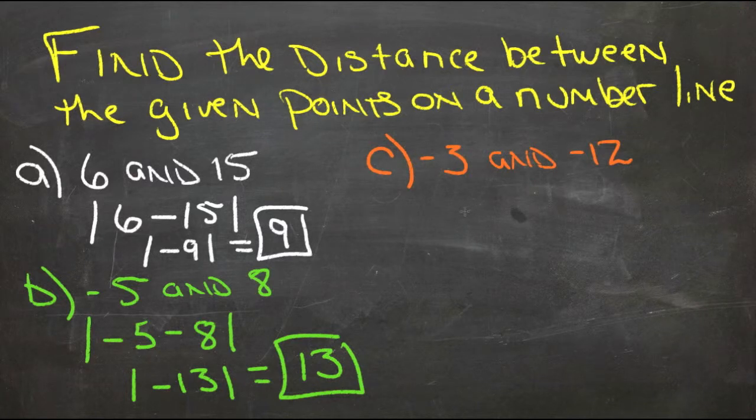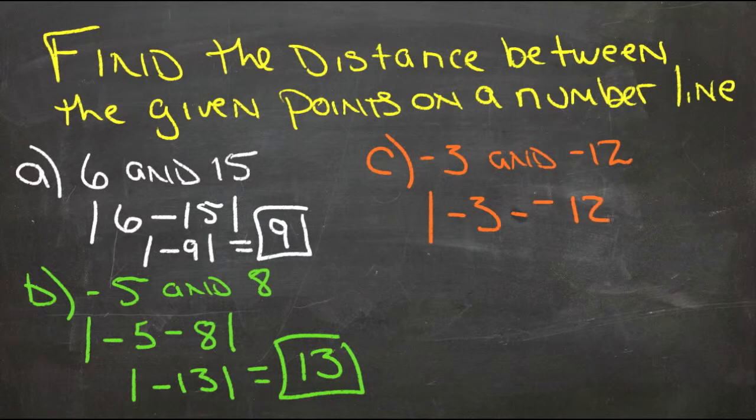And then last, we have the absolute value of negative 3 minus negative 12. Subtracting a negative is adding, so we have negative 3 plus 12. That gives us 9.